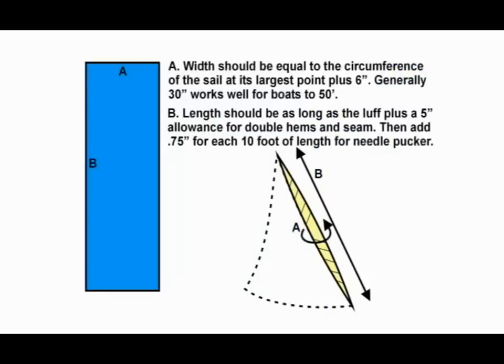Your kit will come with one long length of fabric. You'll be cutting that long length into two long strips. To determine the width of those strips, take the circumference of the sail at its largest point and add 6 inches. The length will be determined by the luff and you'll add 5 inches for double hems and seams and you'll also add 0.75 inches for every 10 foot of luff for any needle pucker.